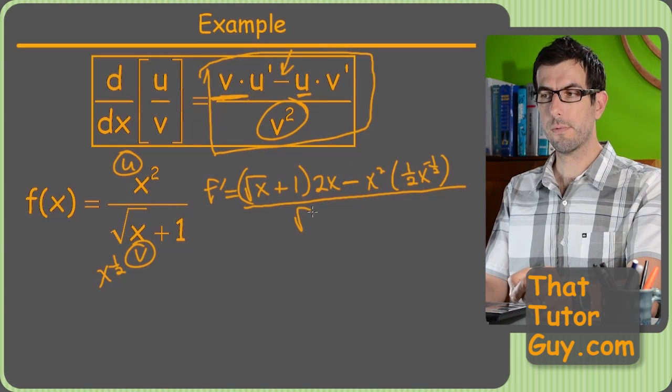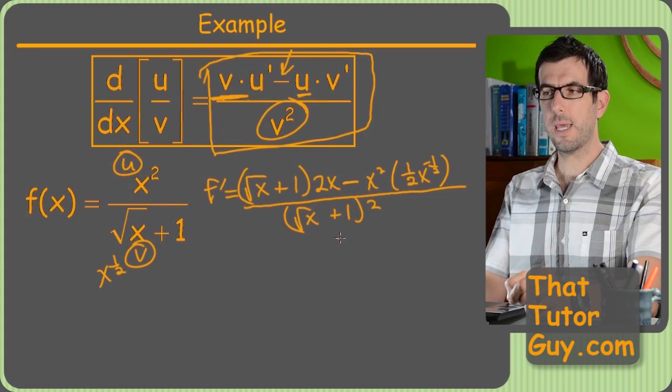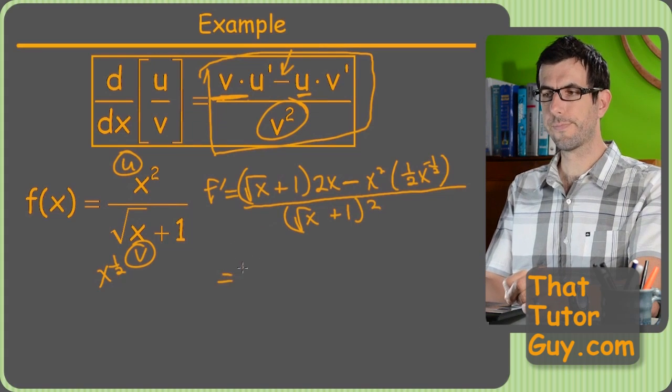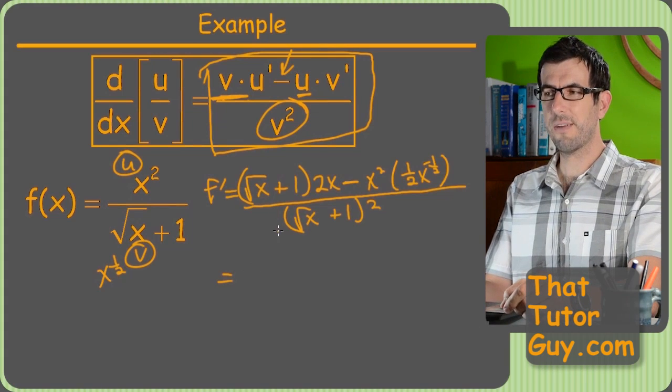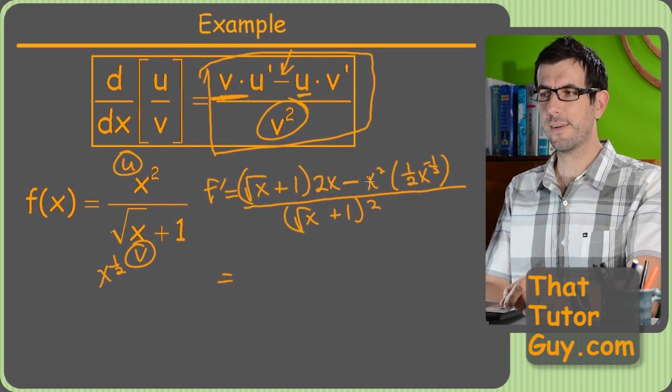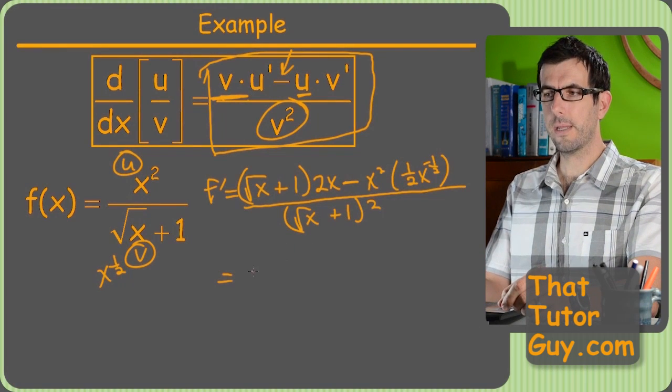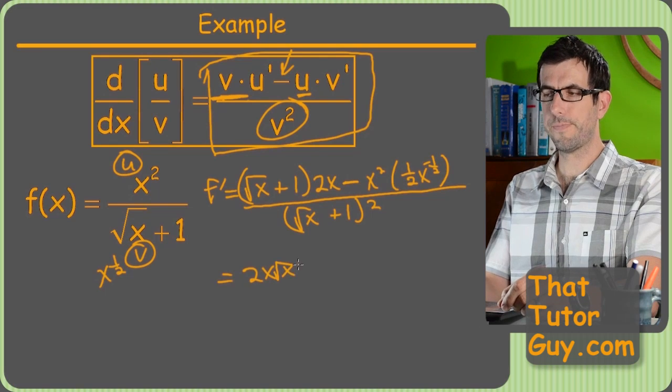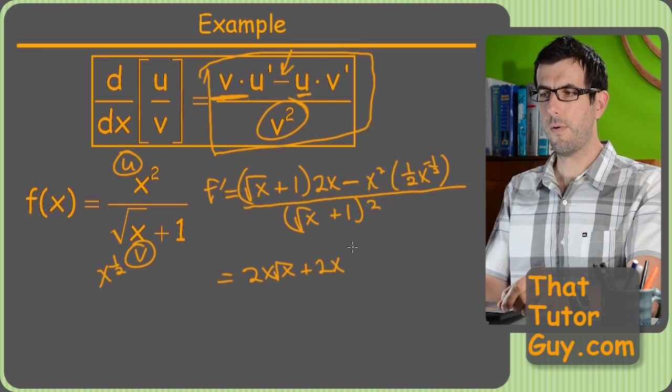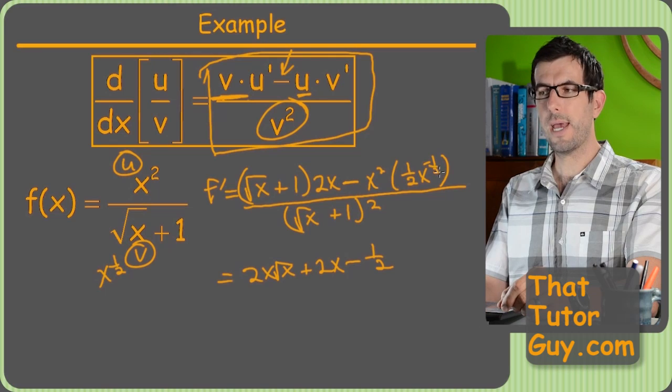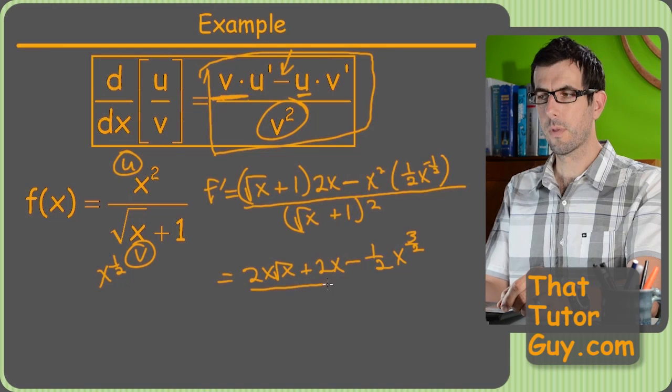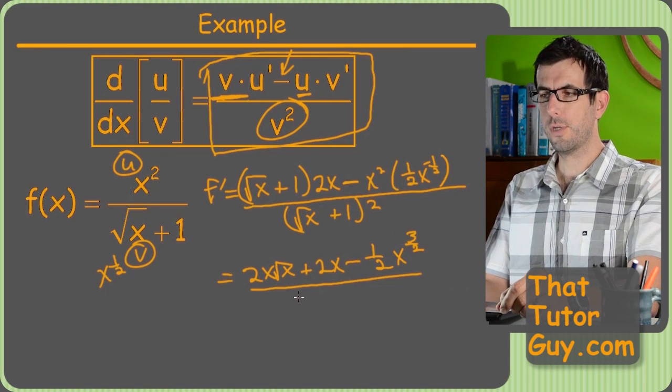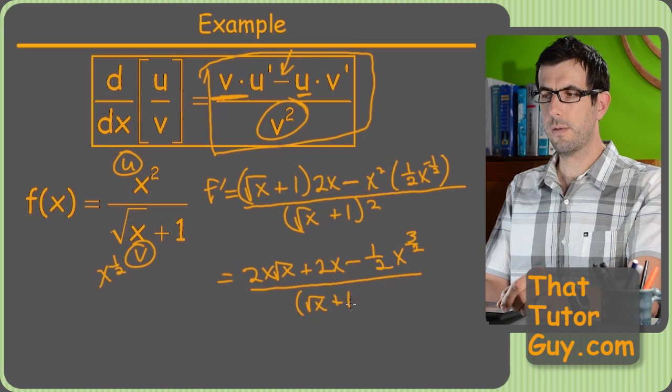Which, once again, I would not encourage you to foil out. Man, I'm writing crooked. So now we just got to foil this thing out. I assume your teacher would not accept this as a good answer. So we need to foil it out and combine stuff where we can. So we're going to get 2X root X plus 2X minus one half, and then X squared times X to the minus one half would just add the exponents and get X to the three halves. All over the same old junk we're always doing, which is square root of X plus one squared.